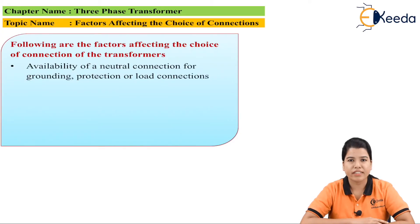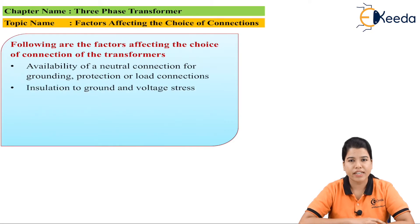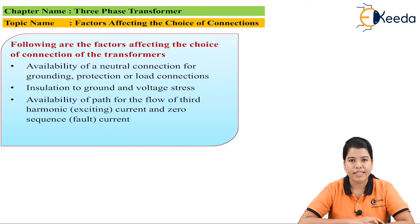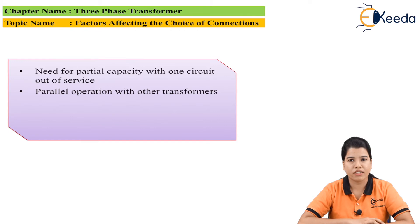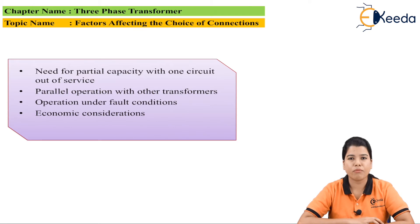The various factors affecting the choice of connection for the three-phase transformer are: first, availability of neutral connection for grounding and protection of the transformer; second, insulation to ground and voltage stress; third, availability of path for flow of third harmonic current and the fault current; fourth, need of partial capacity when one transformer is out of service; fifth, parallel operation with other transformers; sixth, operation under fault conditions; and lastly, economic consideration. These are the various factors which affect the choice of connection of the three-phase transformer.